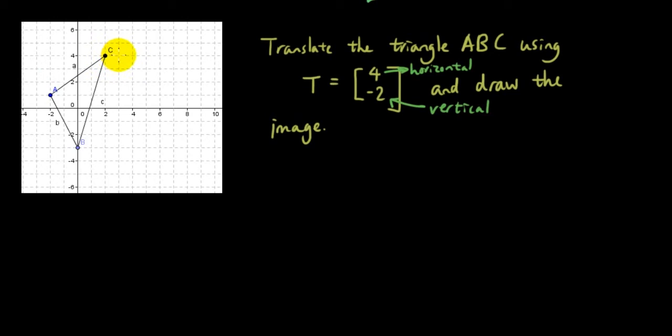So let's start with point C. Let's go 4 units to the right, 1, 2, 3, 4, 2 units down, 1, 2. So we have C dash and we're going to do the same with point A, 1, 2, 3, 4, 1, 2, A dash. And B, 1, 2, 3, 4, 1, 2.